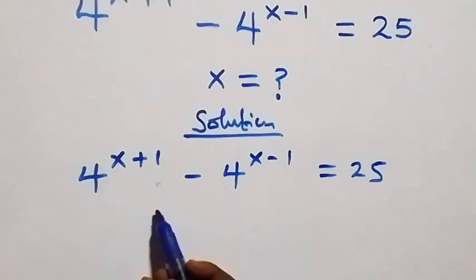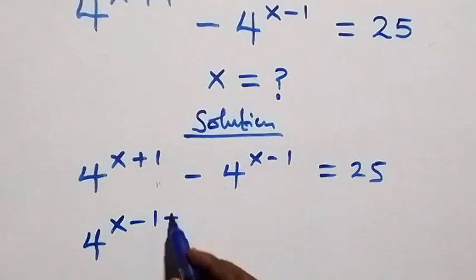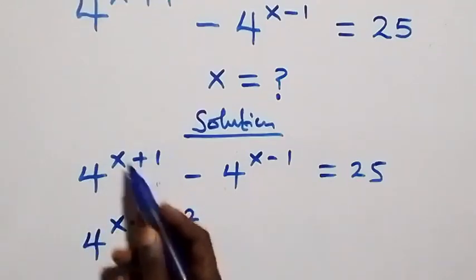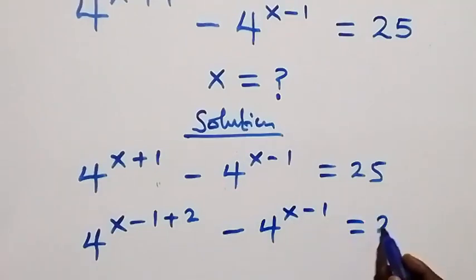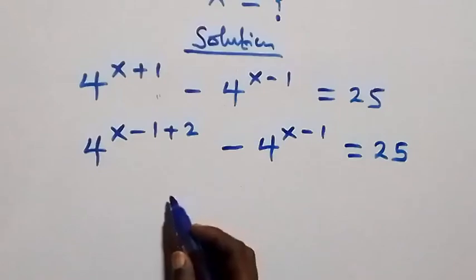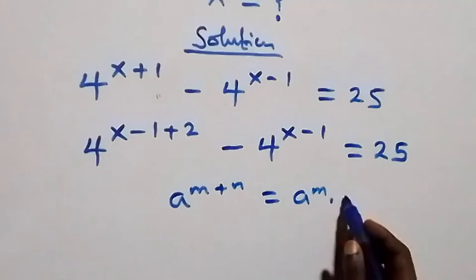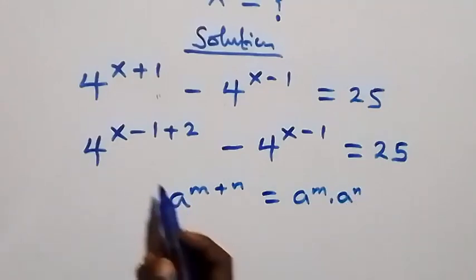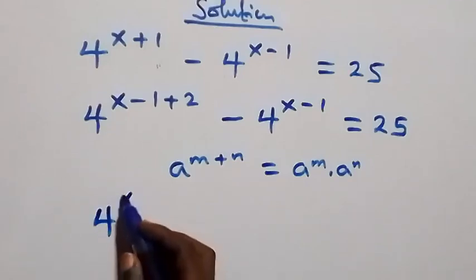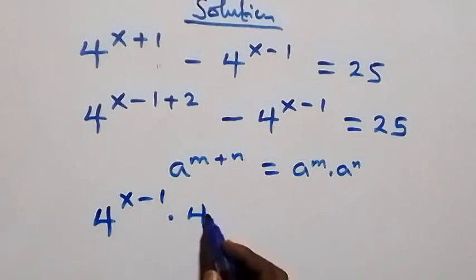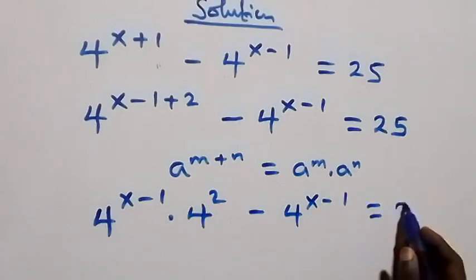We can make four raised to power x minus one common. We write four raised to power x plus one as four raised to power x minus one plus two, then minus four raised to power x minus one equals to 25. Following the law of indices, a raised to power m plus n equals a raised to power m times a raised to power n, we treat m as x minus one and n as two, so this becomes four raised to power x minus one times four squared, then minus four raised to power x minus one equals to 25.